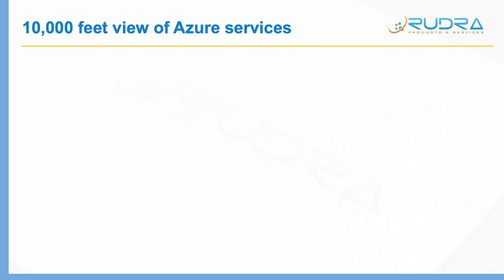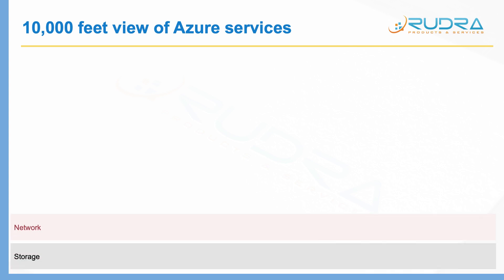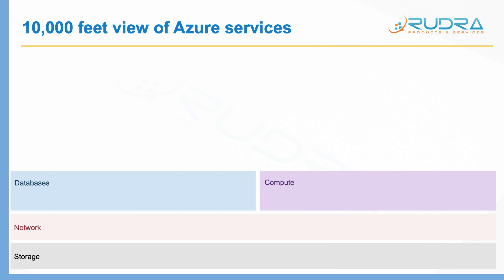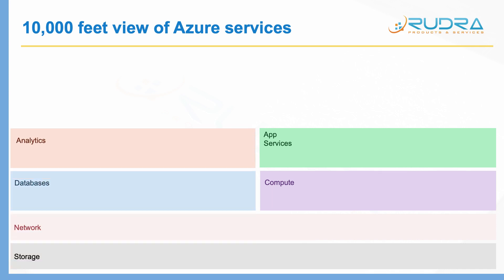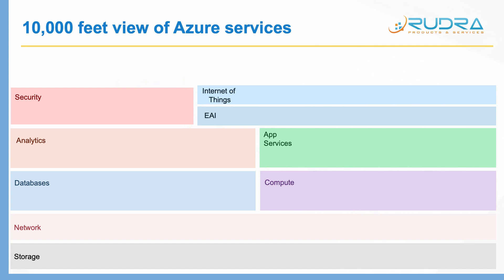Any kind of IT architecture generally starts with storage. On top of storage, you will have network. And on top of network, you will have databases and compute. And on top of compute, you will have app services. And also on top of databases and app services, you can have analytics. And in order to integrate these applications, you can have enterprise application integration. These days IoT is very popular, so I included the internet of things also. And then security — when it comes to the cloud, security is very important. And on top of everything, you have tools to manage and develop the services.